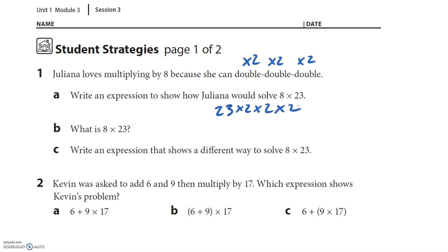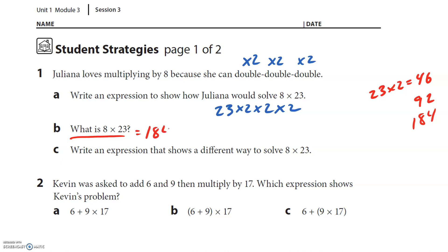So it'll be 23 times 2 times 2 times 2. I'll take some notes on the side. 23 times 2 is 46. Now if I double that — 40 times 2 is 80 and 6 times 2 is 12 — so that's 92. Then 92 times 2: 90 times 2 is 180, 2 times 2 is 4, so the answer is 184.